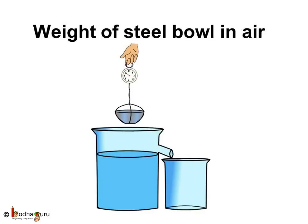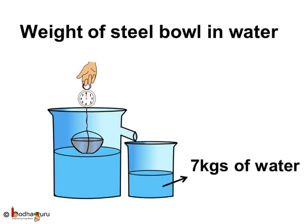Now take the steel bowl and repeat the same exercise. Its weight in air is 7 kg — that is its actual weight. When we put the steel bowl in water, it displaces more water because it is larger in volume. Its apparent weight is 0 because the amount of water displaced is 7 kg or possibly more. Hence the steel bowl does not sink and keeps floating in water.